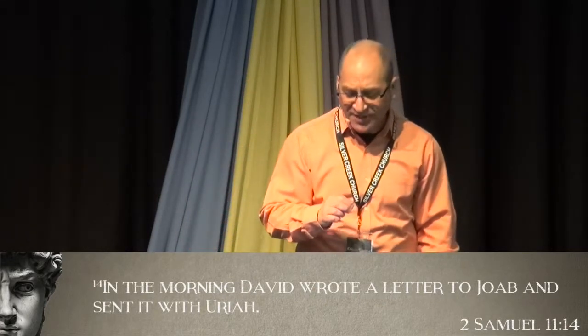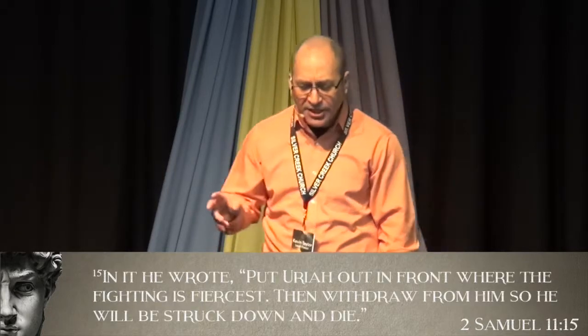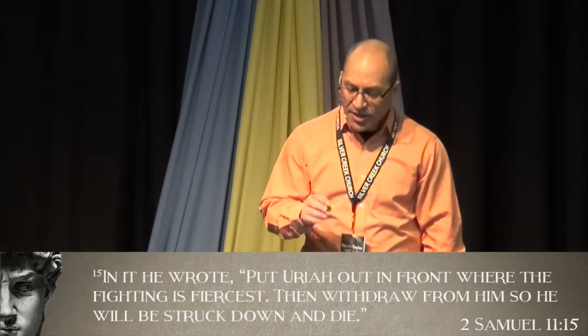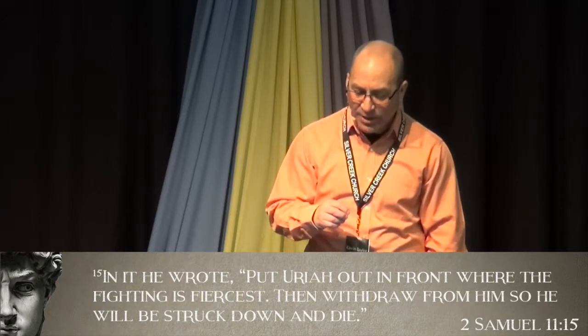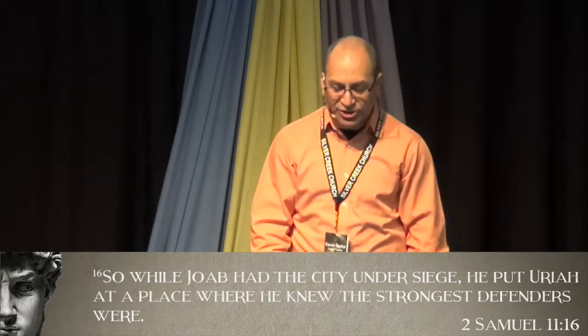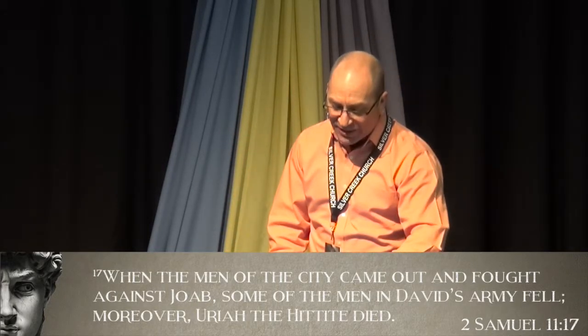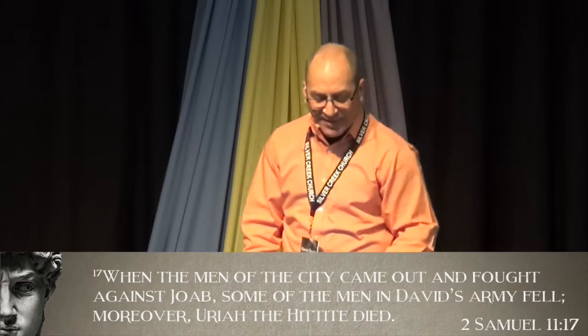Action number 5: David wrote. Verse 14: "In the morning, David wrote a letter to Joab and sent it with Uriah. In it he wrote: 'Put Uriah out in front where the fighting is fiercest. Then withdraw from him so he will be struck down and die.'" So while Joab had the city under siege, he put Uriah where the strongest defenders were. Some of David's men fell — and moreover, Uriah the Hittite died. Friends, David never touched Uriah, never laid a hand on him in violence — but his actions were responsible for his murder. He could no longer cover up the sin, so he tried to eliminate anyone that could draw the connection between him and his sin.